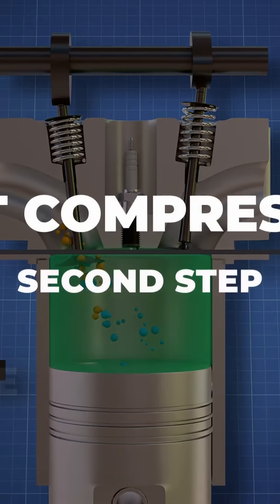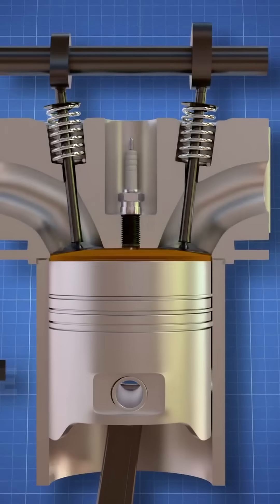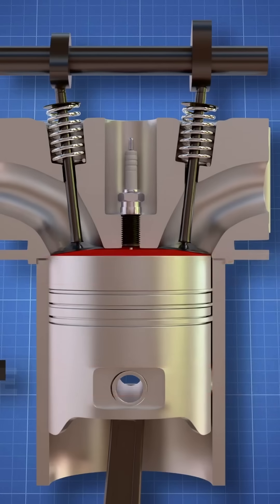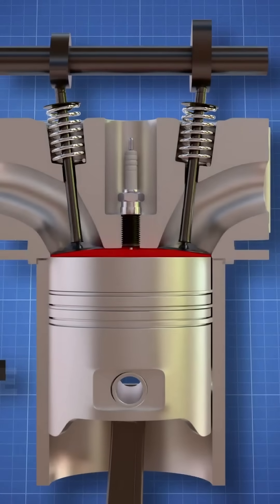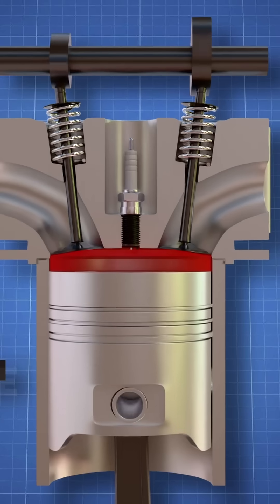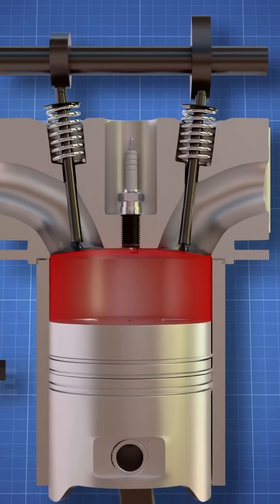In the second stroke, which is compression, the valve closes and the piston moves upwards compressing the air-fuel mixture. When the piston reaches TDC, the spark ignites resulting in the combustion or power stroke which pushes the piston downward. This next step is where this engine starts to differ from regular engines.